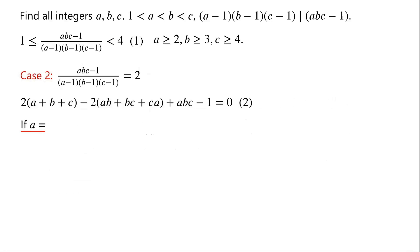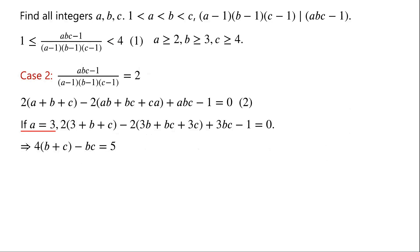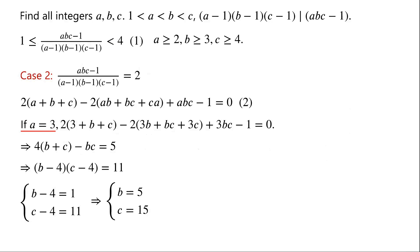If a = 3, then equation 2 becomes 2(3 + b + c) - 2(3b + bc + 3c) + 3bc - 1 = 0. Simplifying, we have 4(b + c) - bc = 5. Rearranging, (b - 4)(c - 4) = 11. As b and c are positive integers and c > b, so b - 4 = 1 and c - 4 = 11, which means b = 5 and c = 15.